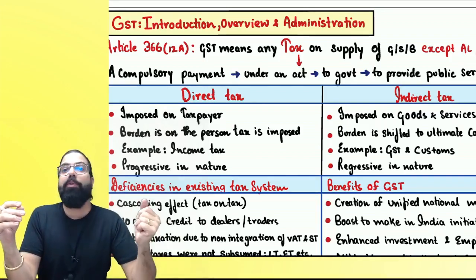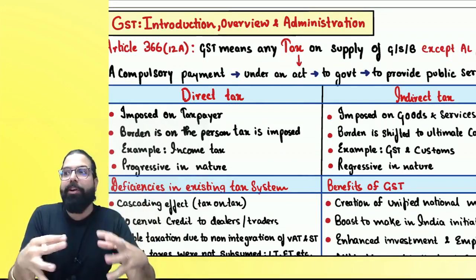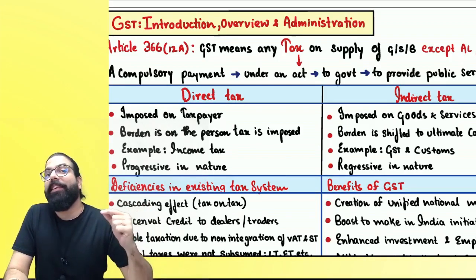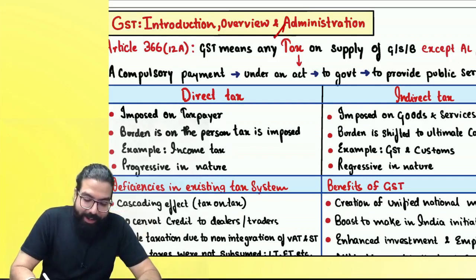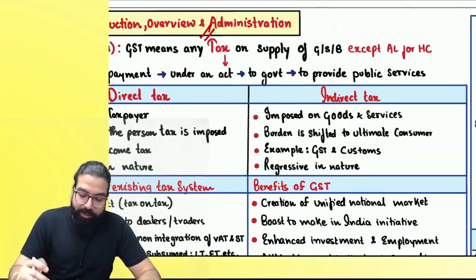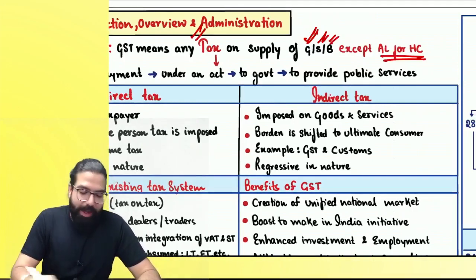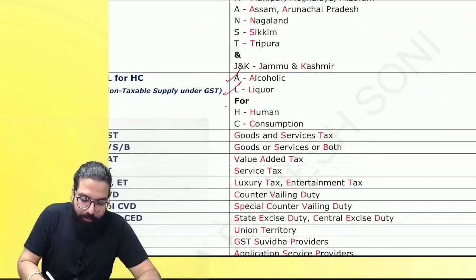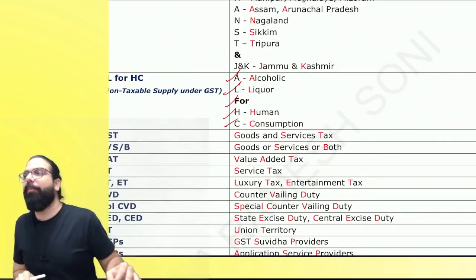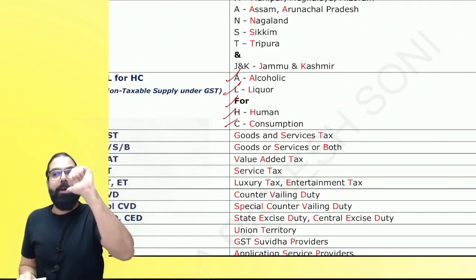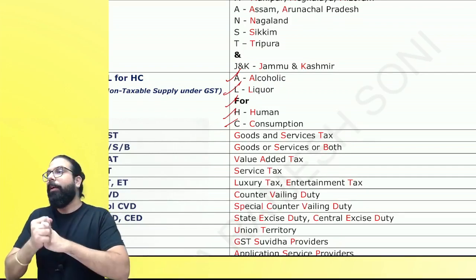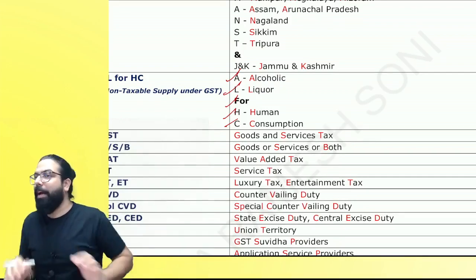GST means any tax which is upon supply of goods, services or both, except alcoholic liquor for human consumption — AL for HC. Alcoholic liquor for human consumption is excluded from GST. The mnemonic shows a bottle saying 'alcoholic liquor for human consumption, GST can't believe it.'